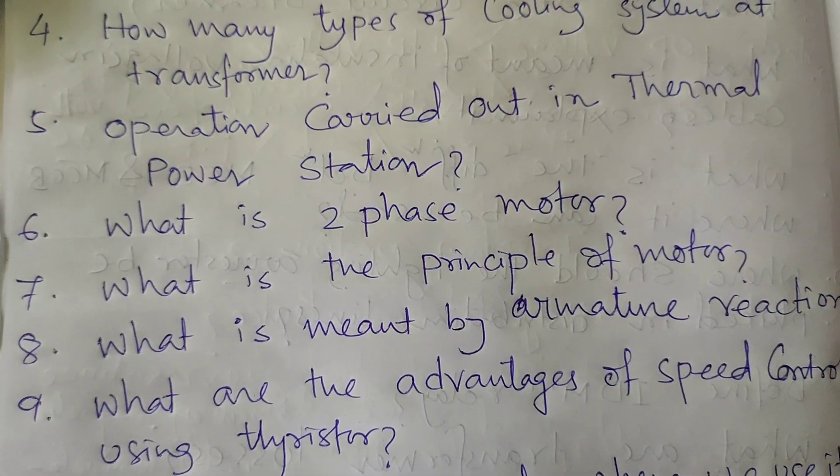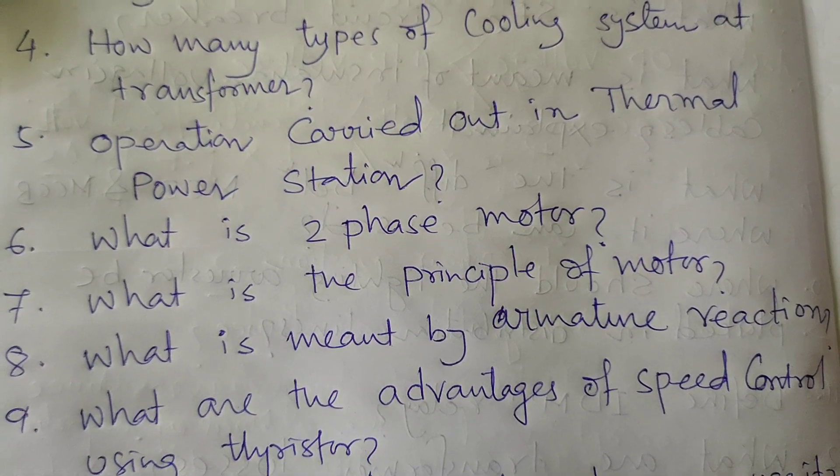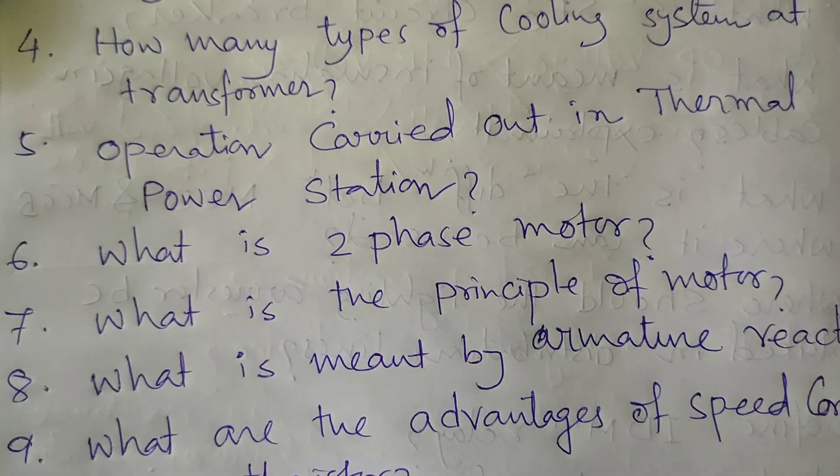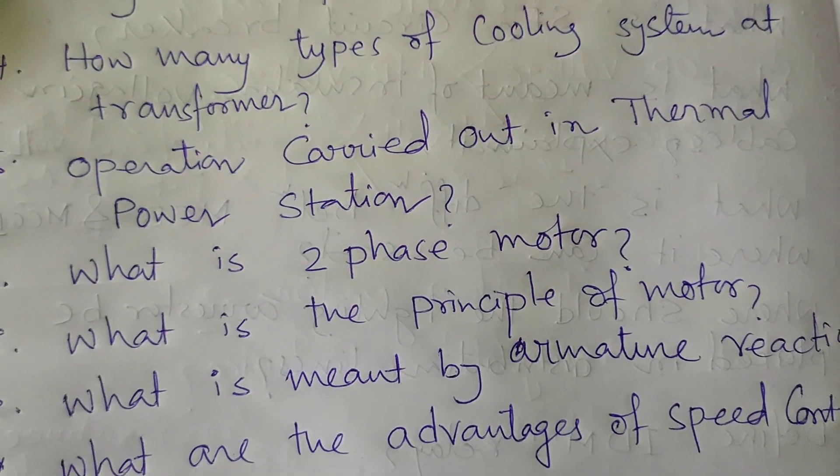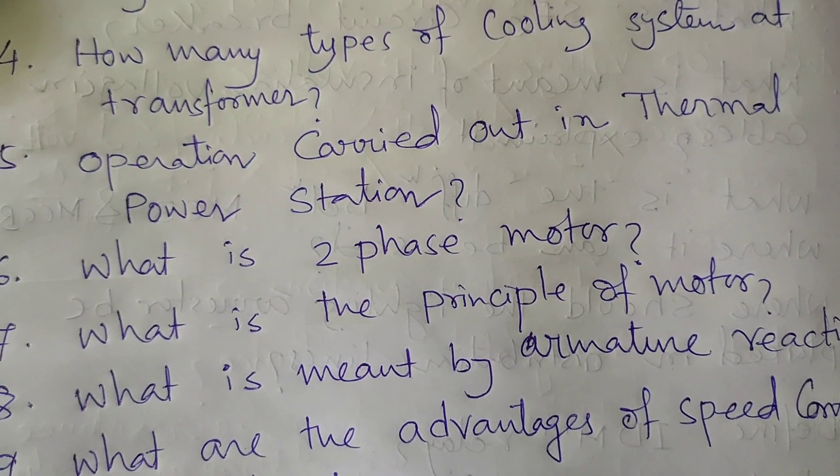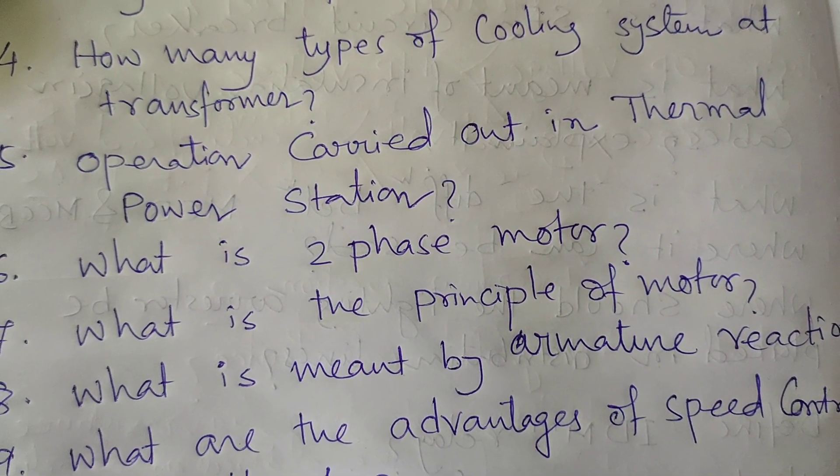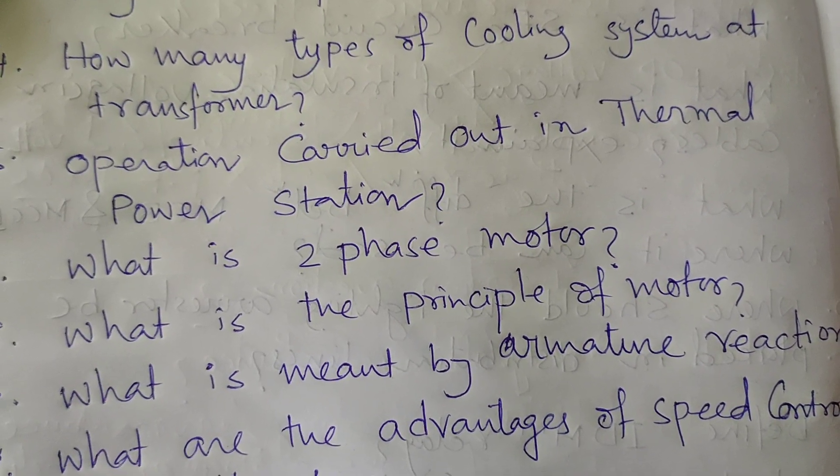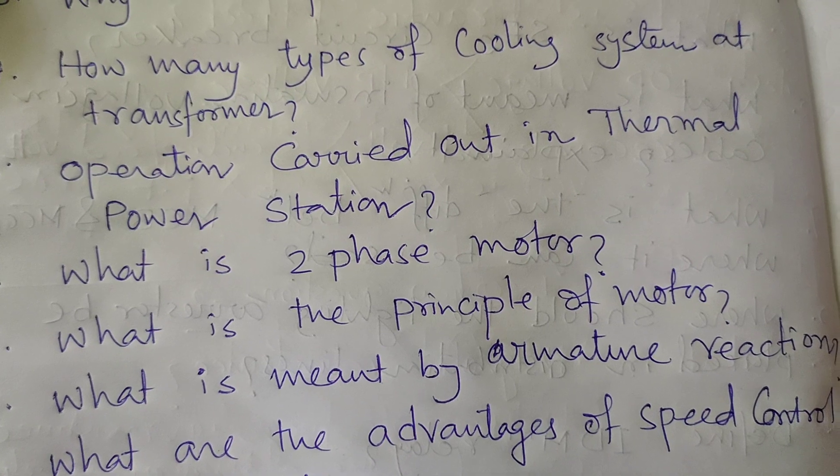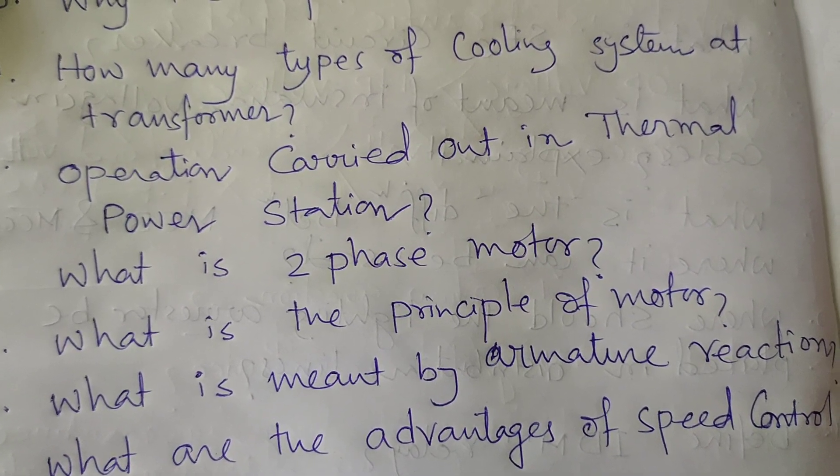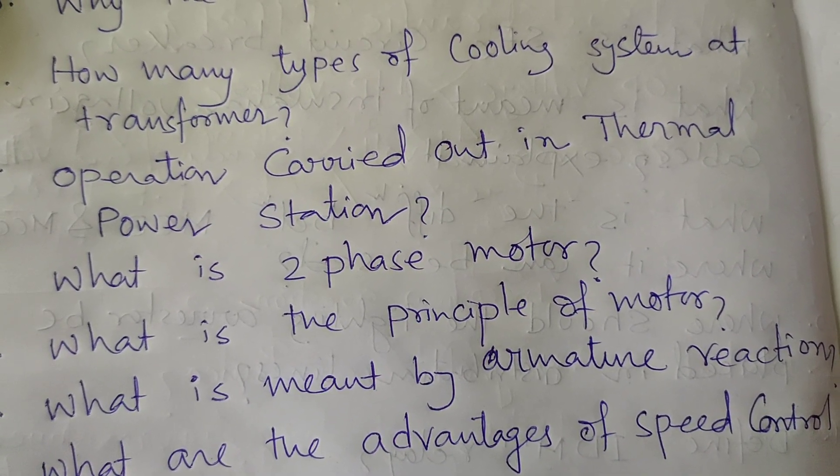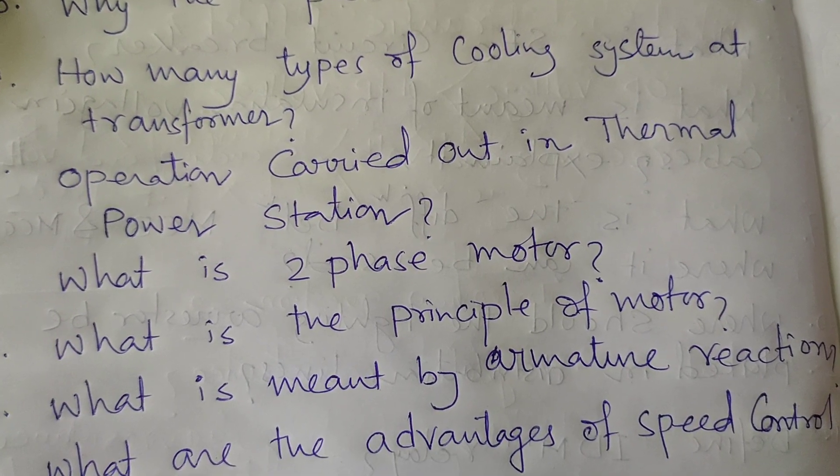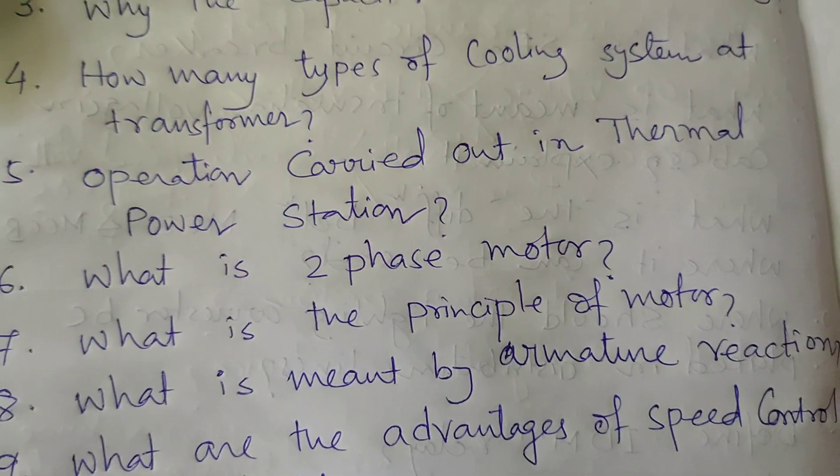Eighth question: What is meant by armature reaction? The effect of armature flux on the main flux is called armature reaction. The armature flux may support the main flux or oppose the main flux. This is the main concept of armature reaction.